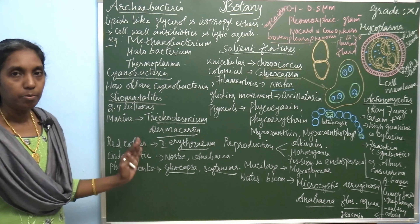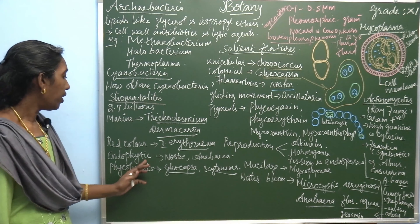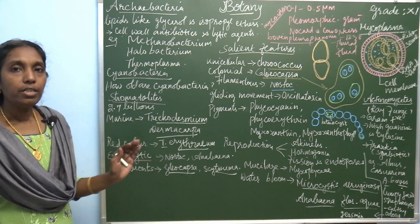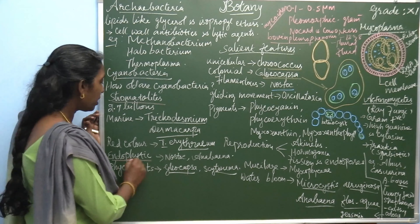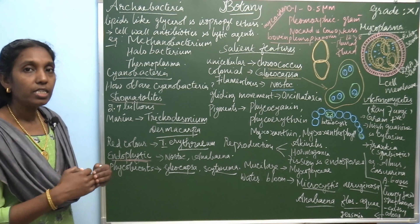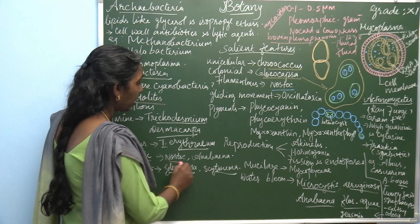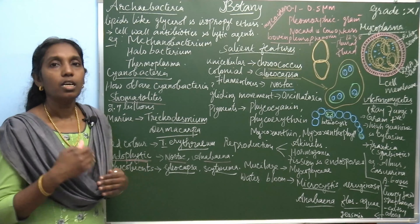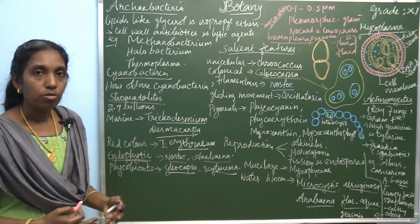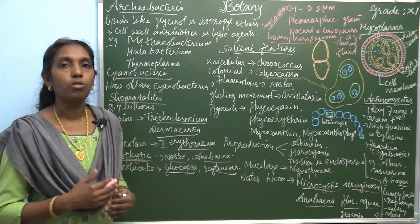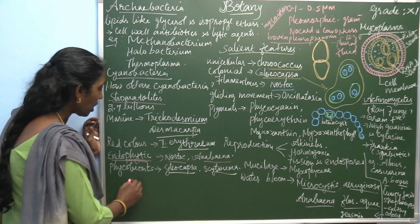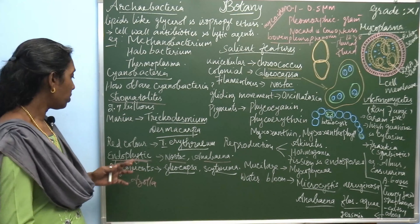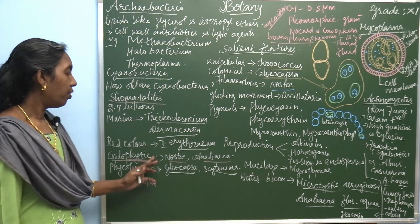All cyanobacterial members are also adapted as endophytic and phycobionts. Endophytic means living between living plants. Examples include Nostoc, Anabaena, and Oscillatoria, which live in the coralloid roots of Cycas. Azolla is a water fern that also makes a symbiotic association with cyanobacteria and fixes nitrogen. These are examples of endophytic species.